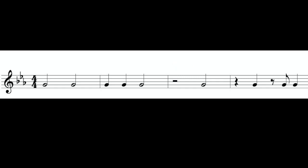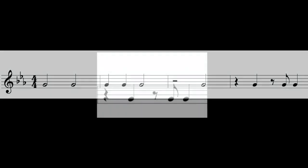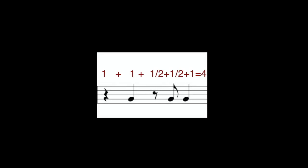Let's take a look at the last example, which is a little more complicated. First we have a quarter rest which gets the value of one beat. The quarter note also gets the value of one beat — one plus one is two. Then we have an eighth rest which gets half a beat, and an eighth note which also gets half a beat — half plus half equals one. So one plus one plus one is three. After that, we have a quarter note which gets one beat for a total of four beats.